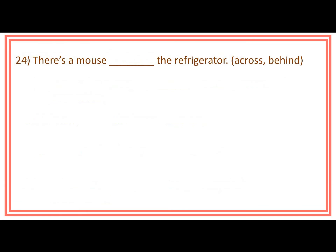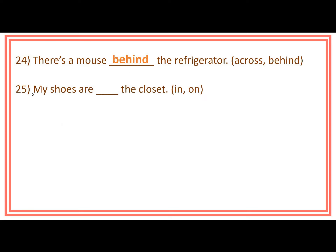We are heading now to the last slide. Number 24: There is a mouse ___ the refrigerator. Prepositions inside the bracket are across and behind. Answer: There is a mouse behind the refrigerator. Number 25: My shoes are ___ the closet. Prepositions inside the bracket are in and on. Answer: My shoes are in the closet.